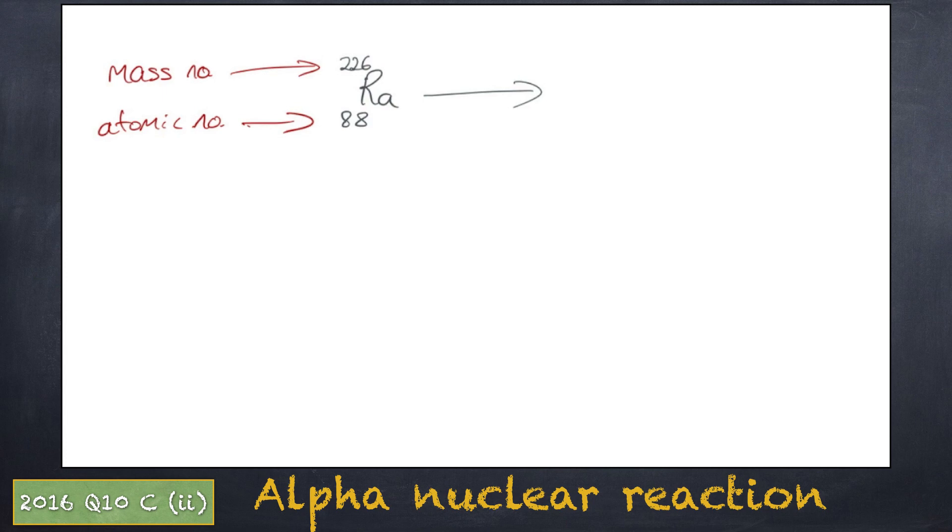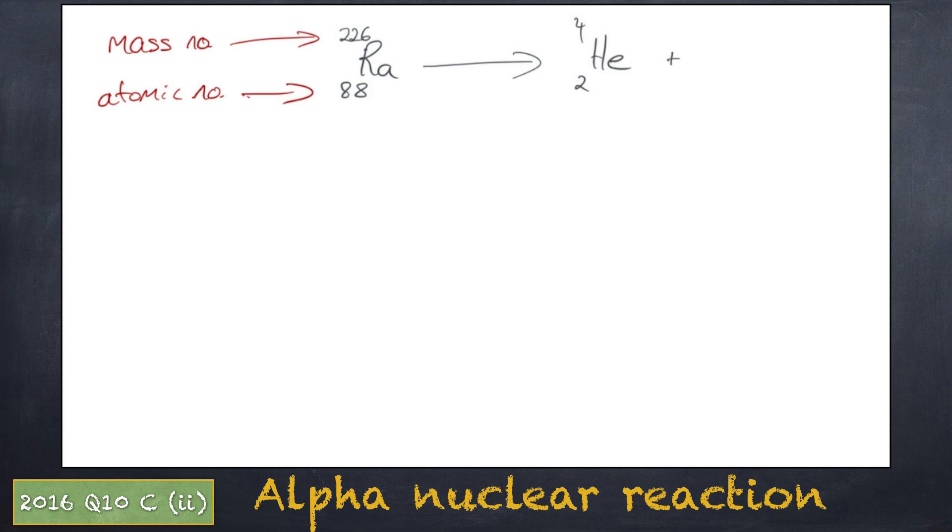It is important not to over complicate these reactions. Pick a radioactive element. We will use radium here. Write down the mass and atomic number. We know for an alpha particle, a helium nucleus is given off. So write down the helium nucleus and give the mass and atomic number.